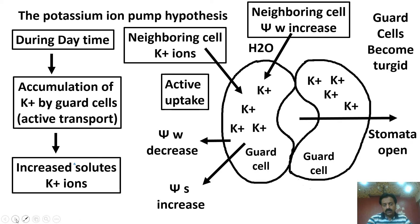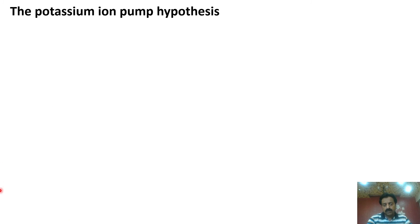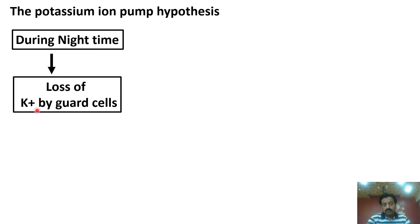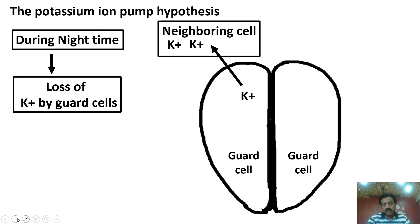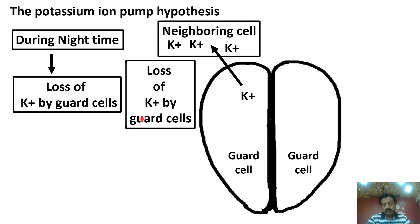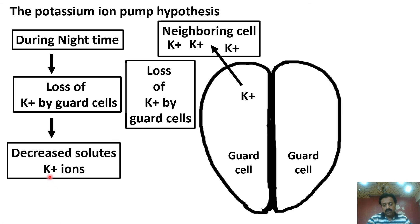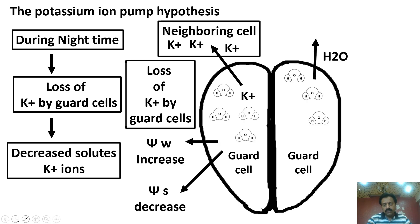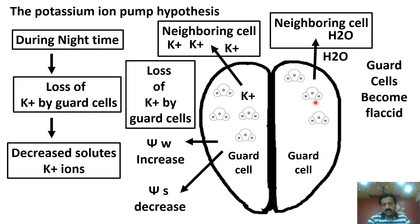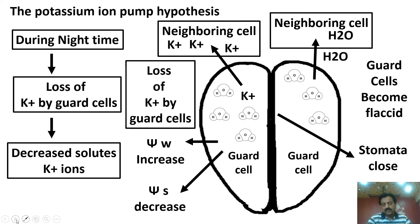At night, potassium ions move out of guard cells and stomata close. The loss of potassium ions by guard cells and their uptake by neighboring cells reduces the solute concentration inside guard cells. ψs decreases, ψw increases in guard cells, and water moves to neighboring cells. Guard cells become flaccid and stomata are closed. This was the mechanism of the opening and closing of stomata. Thank you, dear students.